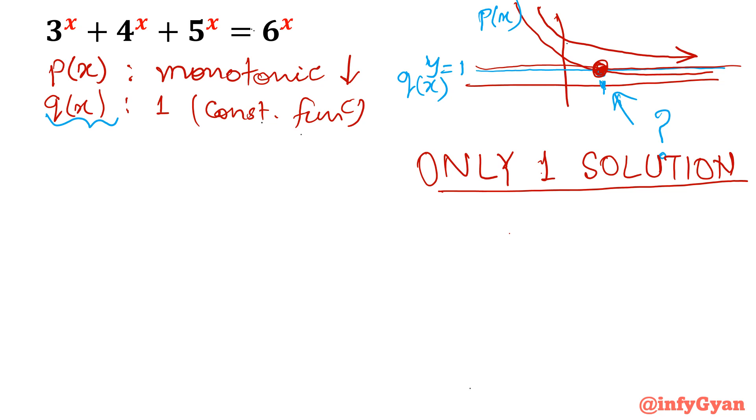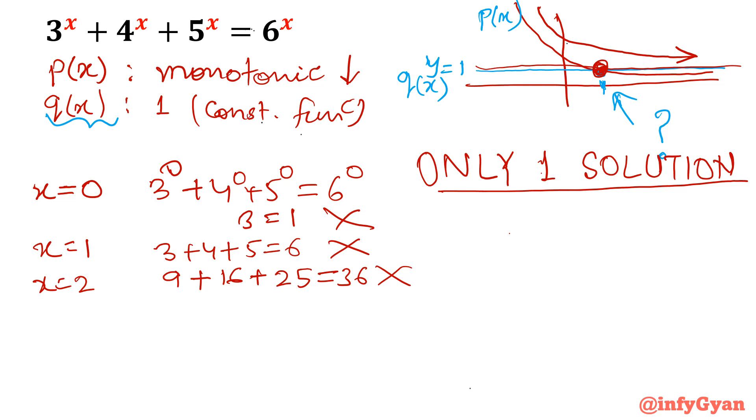Now by hit and trial method. Suppose I am putting x=0. 3^0 + 4^0 + 5^0 = 6^0? 3=1? No. x=1: 3+4+5=12, not equal to 6. x=2: 3^2 is 9, 4^2 is 16, 5^2 is 25. Is it equal to 36? No, 50 is not equal to 36.